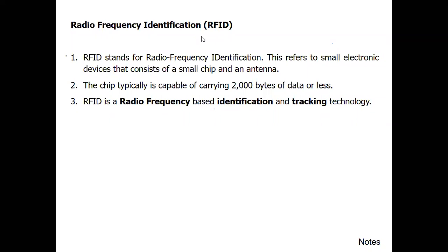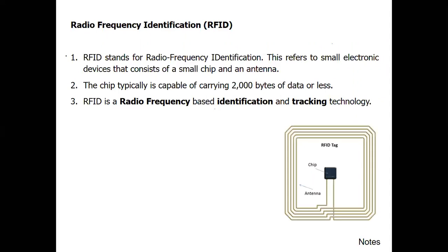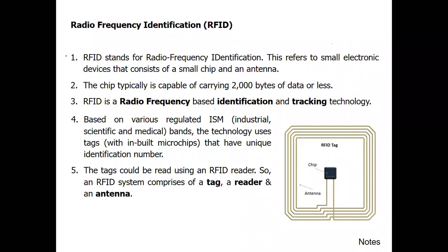RFID has mainly two components: one is the reader and another is the tag. They communicate via some specific frequency. Looking at the RFID schematic diagram, in the middle there is a chip, and the wire going around it is an antenna. Based on various regulated industrial, scientific, and medical bands, the technology uses tags that have a unique identification number. An RFID system comprises a tag, reader, and antenna.